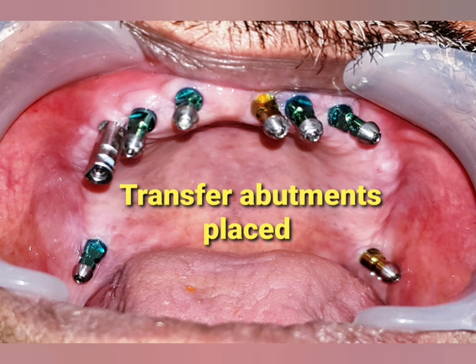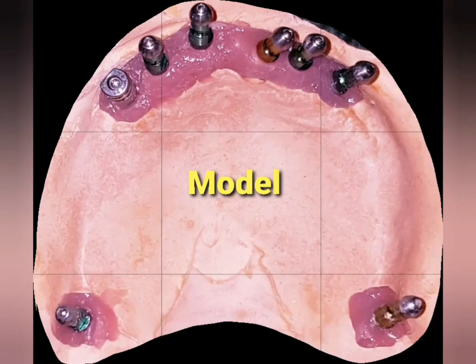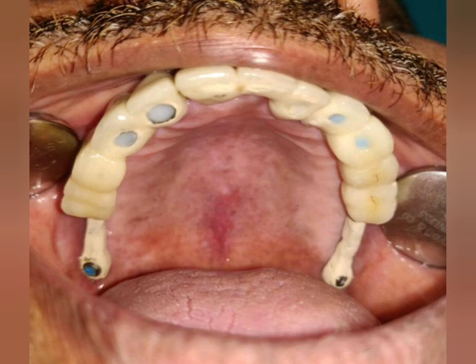At the second stage, after removal of the gingival abutments, I placed the transfer abutments for impressions. We took the impressions, the model was poured, and this picture shows all six anterior implants along with the two pterygoid implants on the model. After that, the abutments were placed, and following all the clinical and laboratory procedures, we finally achieved the final prosthesis.